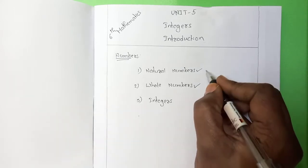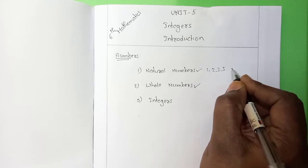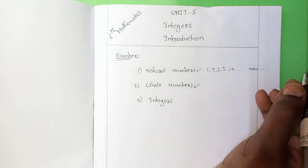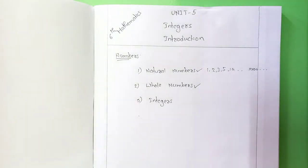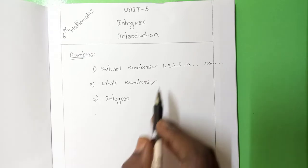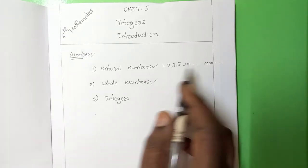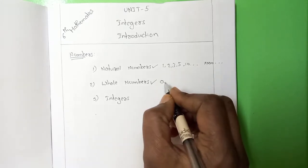What are natural numbers? The numbers start with 1, 2, 3, 4, 5, 10 and so on — 1000, more than 1000, up to 1 crore. We call these natural numbers. What is the difference between natural numbers and whole numbers? The natural numbers start with 1 and all positive numbers are natural numbers. When it comes to whole numbers, the whole numbers start with 0.